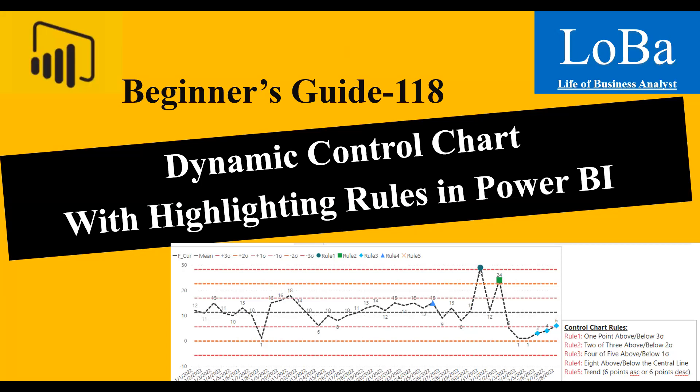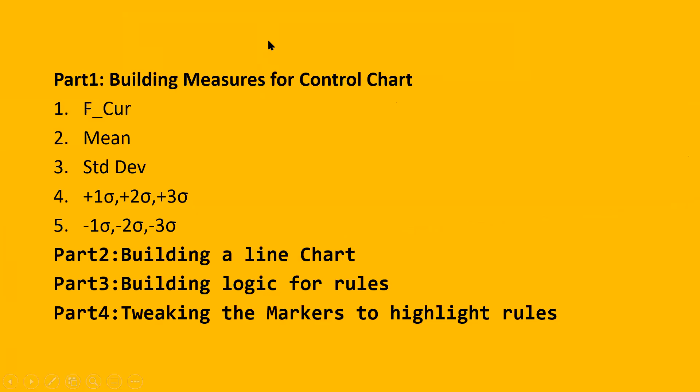I have classified the entire exercise into four steps. Part one is building measures for the control chart. The second one is building the line chart. Third is building the logic for various rules. And part four is tweaking the markers to highlight the rules. Without wasting our time, let's quickly move to the PBX file and start to build the measures.